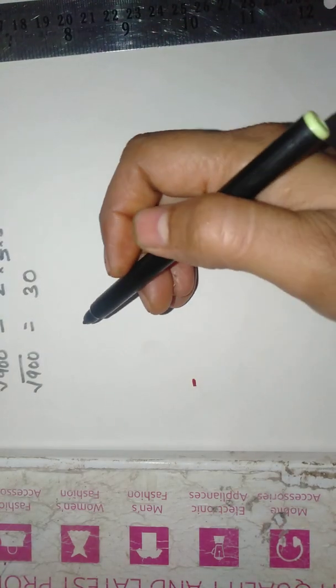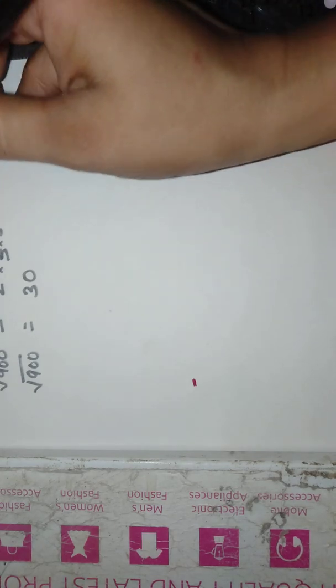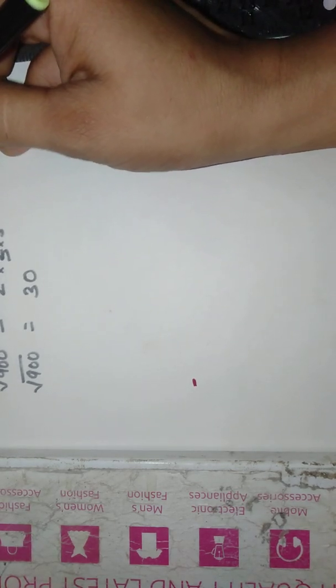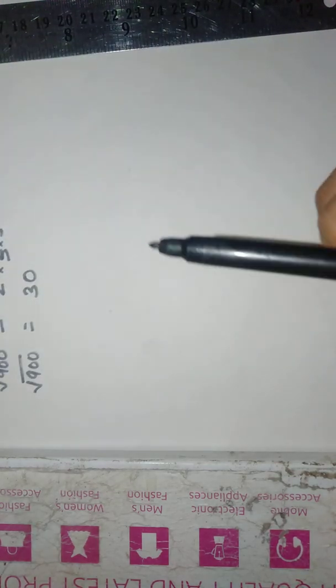Now to find out what smallest number should be multiplied, the smallest number that should be multiplied is 5, the number which is left over, whose pair is not there.